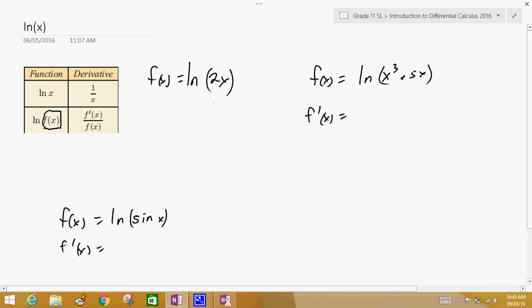Suppose you have f(x) = ln(2x). Well, the derivative of that is f'(x) = 1/(2x) times the derivative, which is 2, which equals 2/(2x), which equals 1/x.